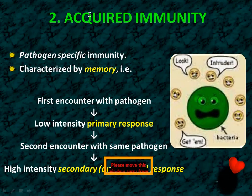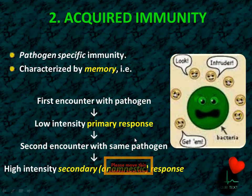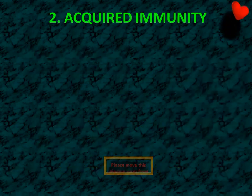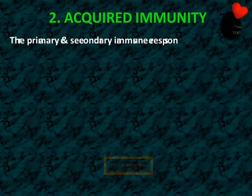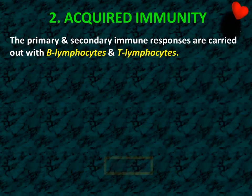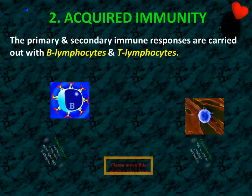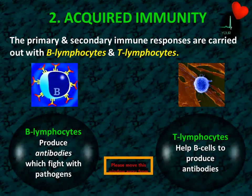Acquired immunity — which comes after birth — includes natural active acquired immunity, when we encounter the pathogen naturally for the first time. Vaccination falls under artificial active acquired immunity, because we introduce the pathogen into the body artificially, and at that time we get memory cells. We call vaccination artificial active acquired immunity.